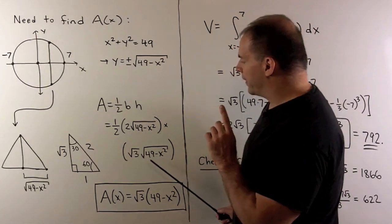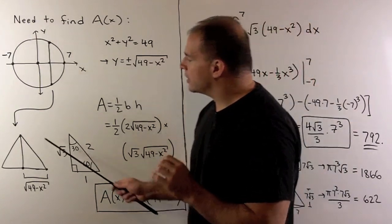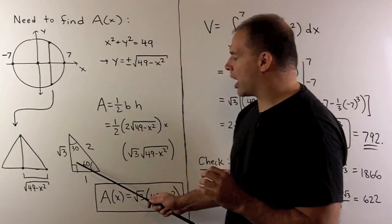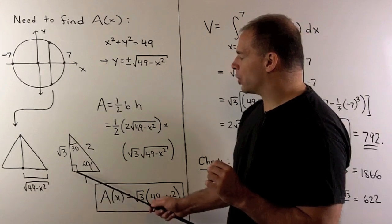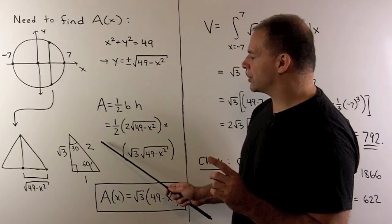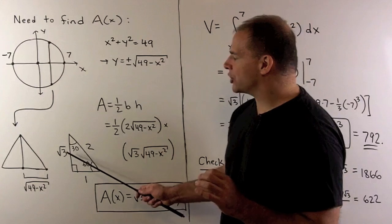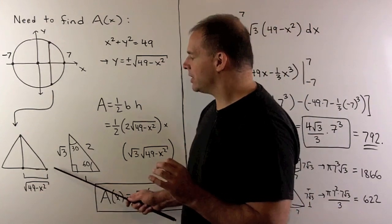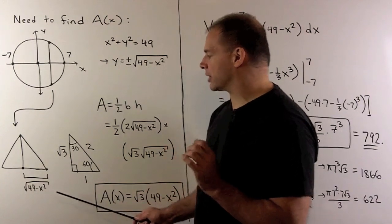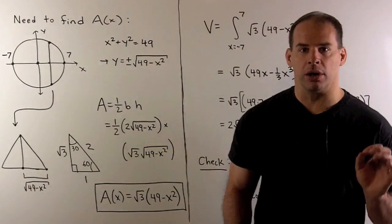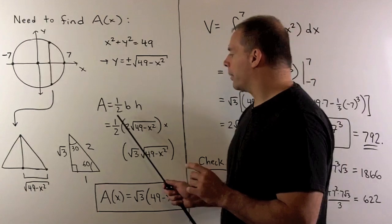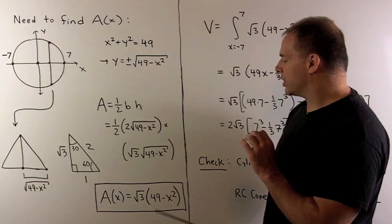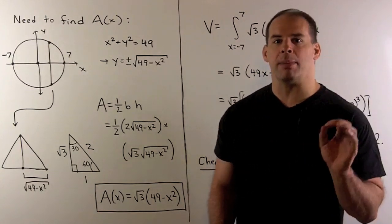Now, if we want the height, let's split our equilateral triangle in half. That'll give me a 30-60-90 triangle. If the length of the short side is equal to 1, then the length of the hypotenuse is 2. The length of the other side is square root of 3. So, if we want the height, we take the base, which is square root of 49 minus x squared, multiply by square root of 3. That gives the cross-sectional area at x as square root of 3 times 49 minus x squared.